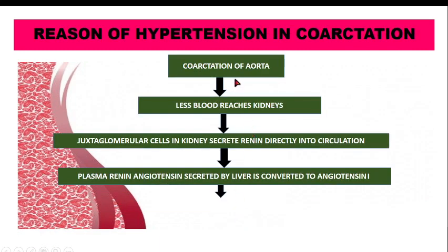Coarctation causes less blood to reach the kidneys, because the renal artery branches from the abdominal aorta, which is distal to the obstruction. When less blood reaches the kidneys, juxtaglomular cells in the kidney secrete renin directly into the circulation.